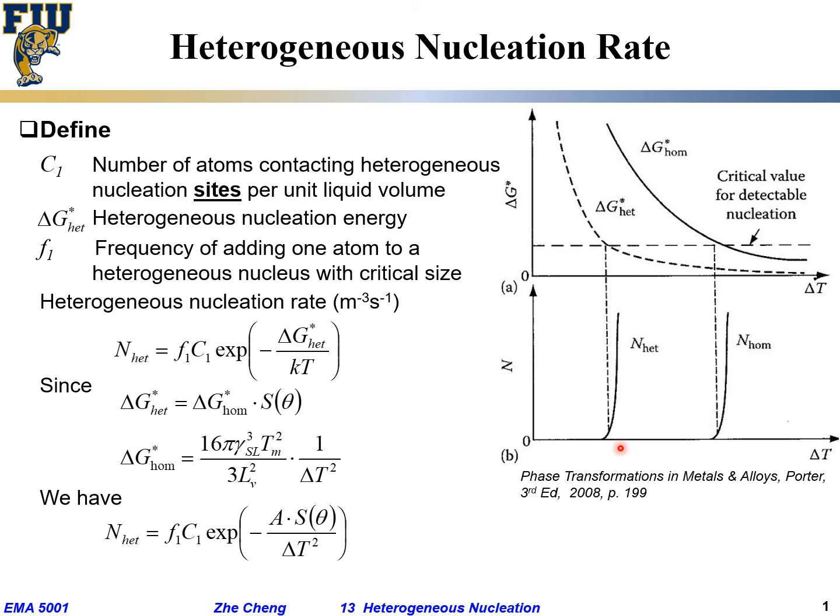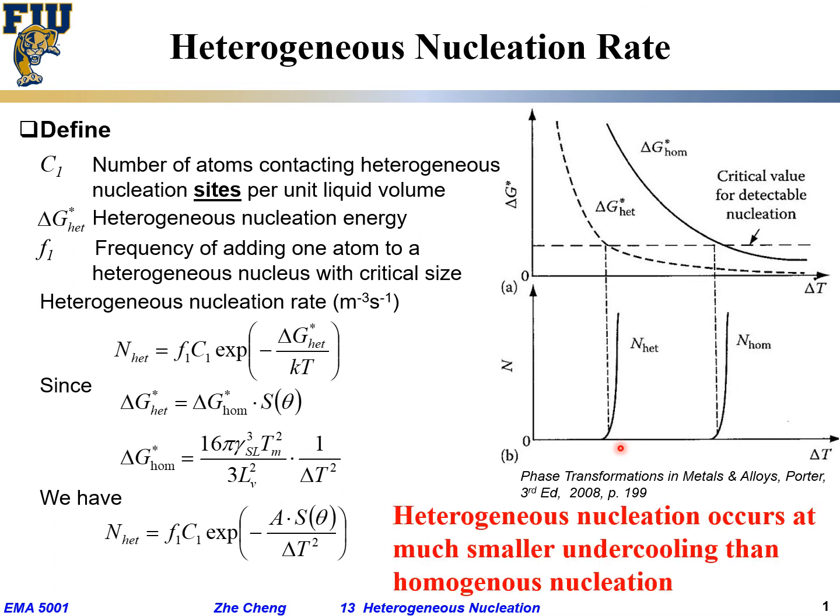That's why typically, if you are not very careful, you typically go through the so-called heterogeneous nucleation. It happens at a specific location, but much faster. So that concludes here. We said heterogeneous nucleation occurs typically at much smaller undercooling than homogeneous nucleation. It goes at a much faster rate.